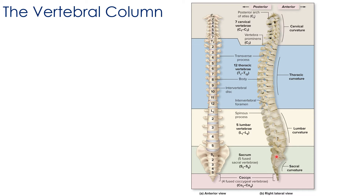A useful mnemonic to remember the cervical, thoracic, and lumbar vertebrae is thinking about the numbers seven, twelve, and five in terms of when you would eat breakfast, lunch, and dinner.